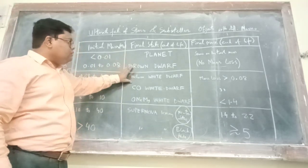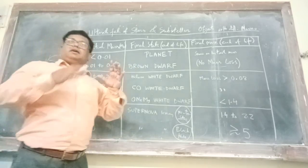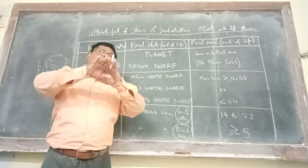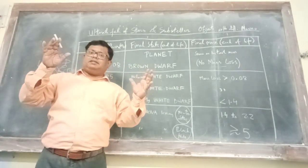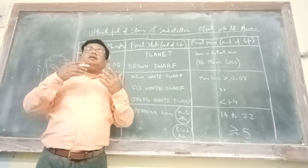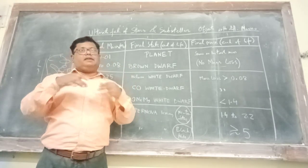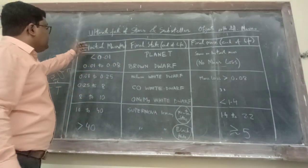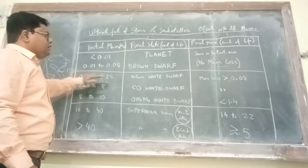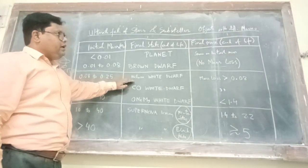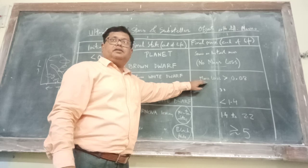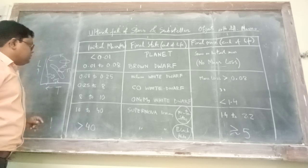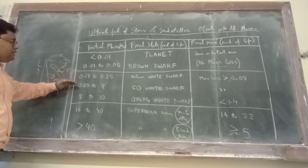But now here let me talk about helium white dwarf. Helium white dwarf is one which is mainly made up of helium. I am assuming that the mass is such that most of the hydrogen has converted into helium. So the initial mass if it is around in this range then we will have helium white dwarf. And see mass loss has started. Some mass loss will be there. It is greater than 0.08 solar masses.